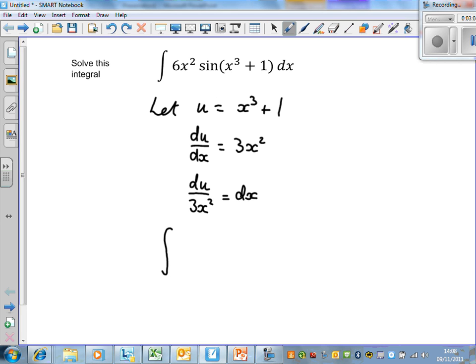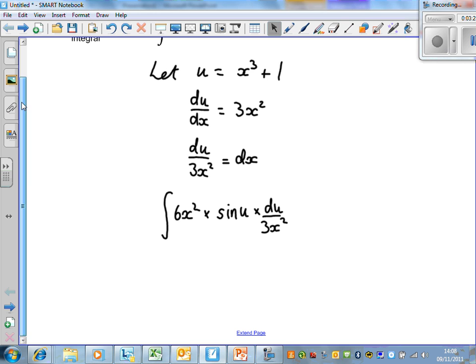So we get the integral of 6x² multiplied by sine u times dx. Now dx is times by du over 3x². And this has worked out really nicely, because the x² is going to cancel here. So the x² cancels there, so it eliminates the x².